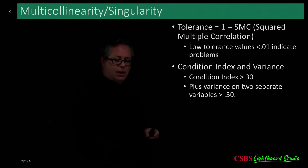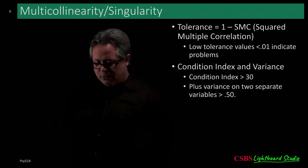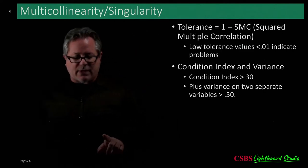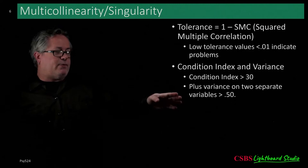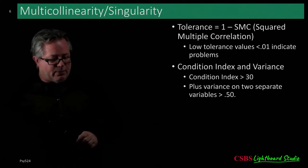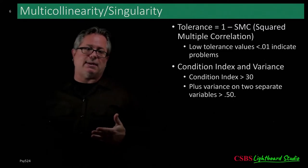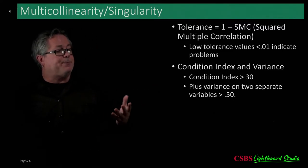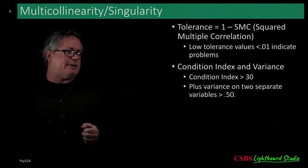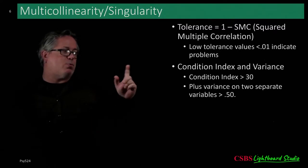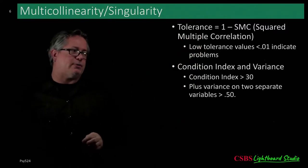Now let's talk about multicollinearity and singularity in more detail. One measure of multicollinearity is something called tolerance. Tolerance is tested in programs like SPSS, in R packages like psych, and in SAS. It's measured as one minus the squared multiple correlation.